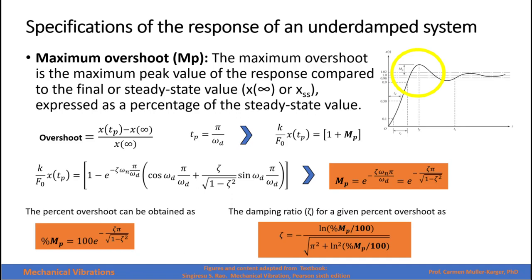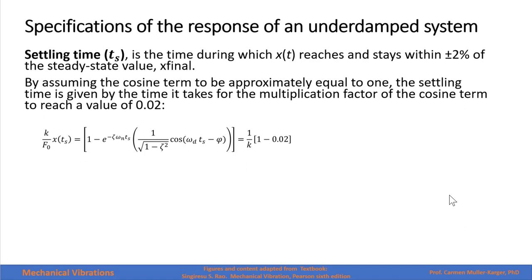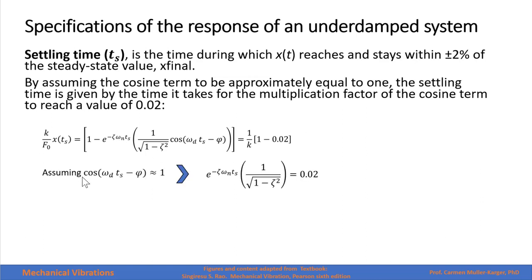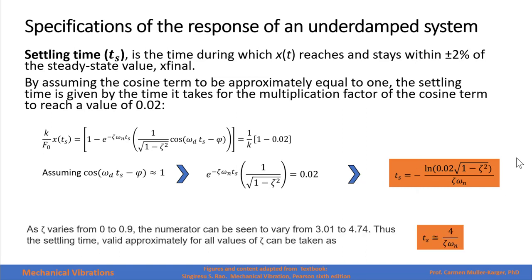As noted earlier, a greater zeta value gives less overshoot. The settling time is the time during which the response reaches and stays within 2% of the steady state value. Assuming the cosine term is approximately 1 at that time, the settling time is found by setting the exponential multiplying factor equal to 0.02 and solving. As zeta varies from 0 to 0.9 for an underdamped system, the numerator ranges between 3.01 and 4.074, so we approximate the settling time as 4 divided by zeta times omega_n.